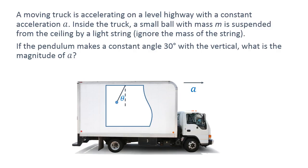So the tension of the string provides two components. One is the vertical component, one is the horizontal component. The vertical component balances the gravitational force, and the horizontal component provides the acceleration in the horizontal direction.